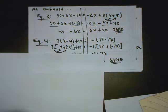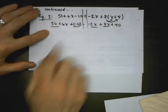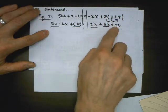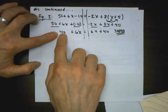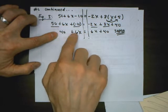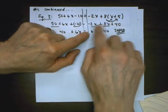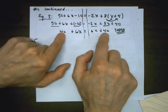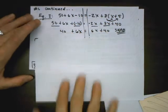Equation 3: I do the rule for subtraction and distribute. 8 times x is 8x, 8 times 5 is 40. Combining constants: 50 and negative 10 gives 40, plus 6x. Adding the x's: negative 2x plus 8x is 6x. I see my coefficients are the same and my constants are the same — that has infinitely many solutions.